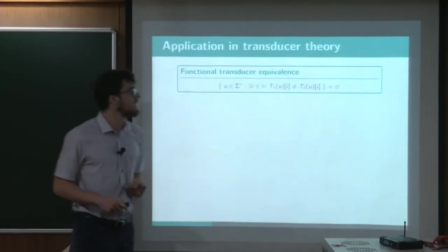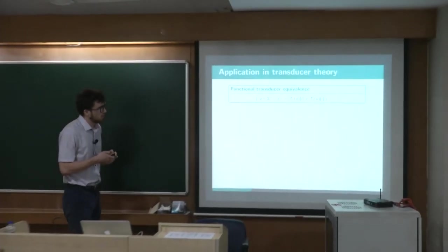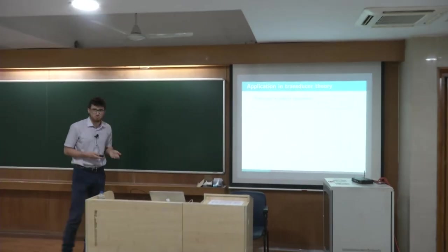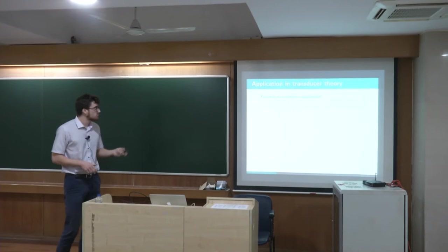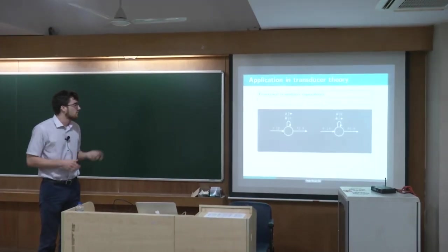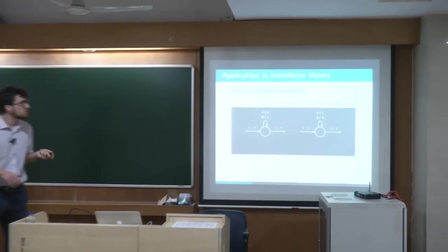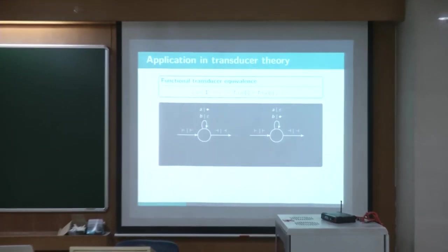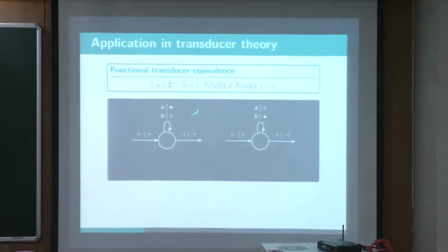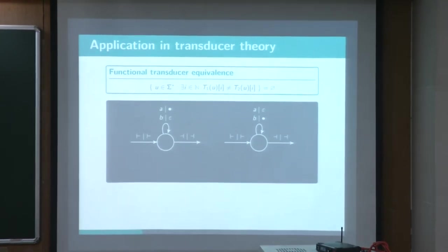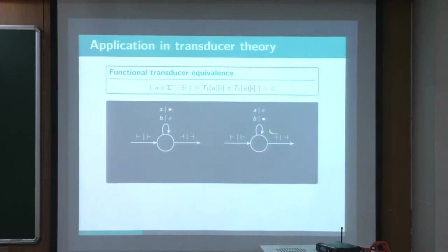So here is my statement and I want to then ask this equivalent question for this instance where the first transducer rewrites all A's with a bullet and the second one does the exact same things but with B.